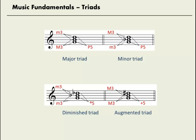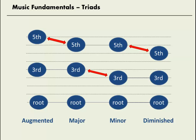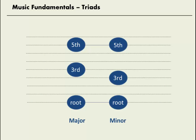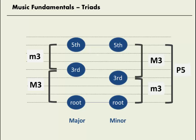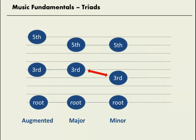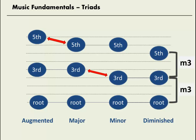We can put all this information together and think less about the actual intervals and more about the relationship among the triad types. The difference between a major and minor triad is the third — it's a half step higher in major than in minor. The difference between major and augmented is the fifth — it's a half step higher in the augmented triad than in the major triad. The difference between minor and diminished is also the fifth, but it's a half step lower in diminished. This little chart helps explain all these differences, and it's the first thing we have to know to spell triads.